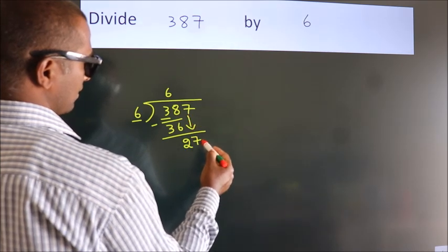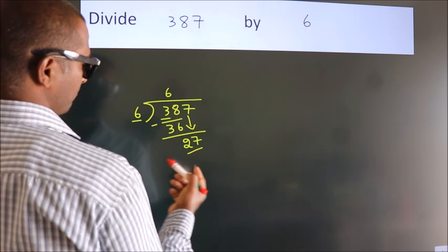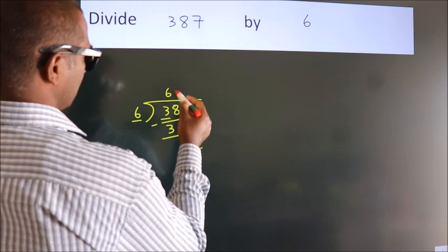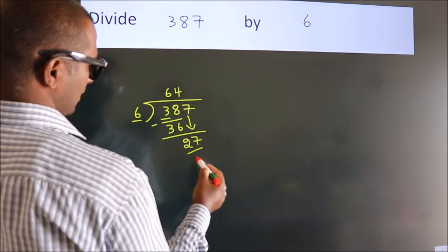So, 7 down. So, 27. A number close to 27 in the sixth table is 6 times 4 equals 24.